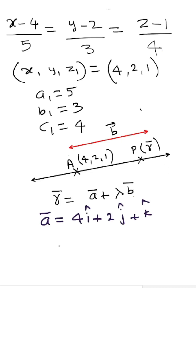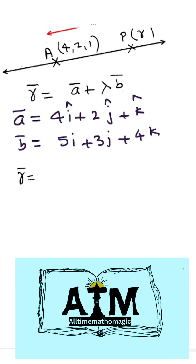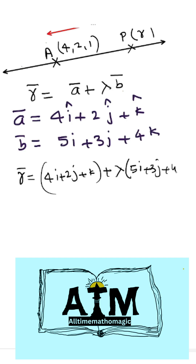Vector b is a parallel vector obtained from the direction ratios, so vector b = 5i + 3j + 4k. Substituting vector a and vector b into the equation, the required equation of the straight line is: vector r = (4i + 2j + k) + λ(5i + 3j + 4k). This is how the Cartesian equation is converted into vector form.